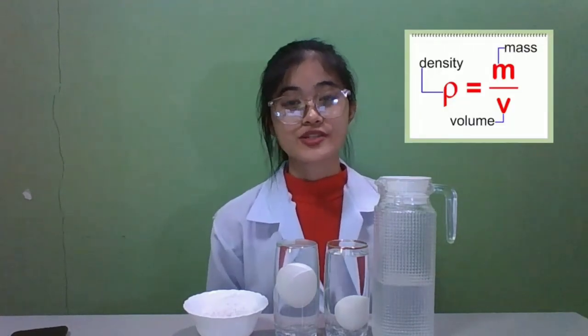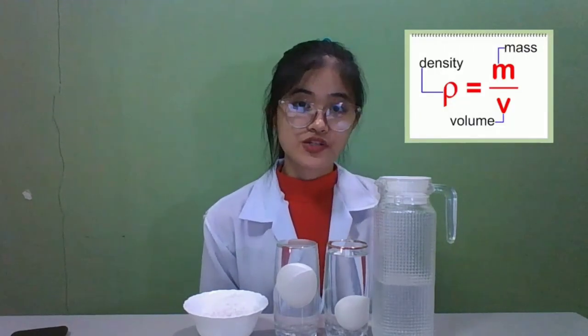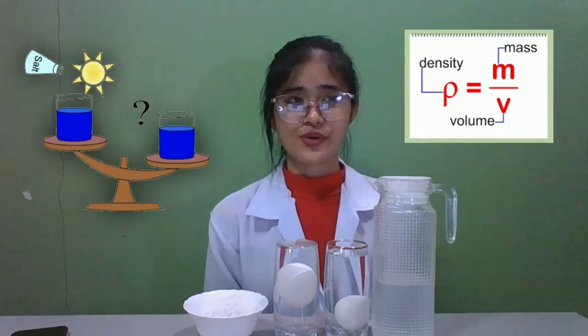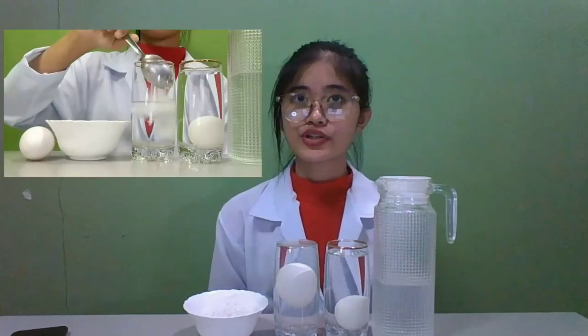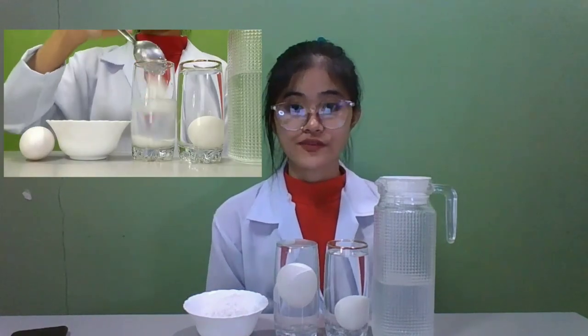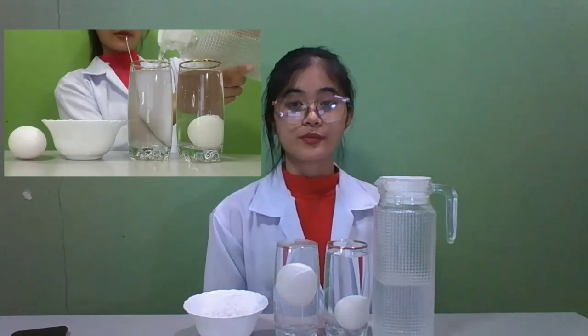Why does it happen? Earlier, I told you the definition of water density, which is defined as the weight of water per its unit volume, which is affected by the temperature and salinity of water. Water salinity refers to the amount of salt dissolved in water. In the fourth procedure, we added four tablespoons of table salt into the half-full amount of water in the second clear drinking glass. After stirring, we added the rest of the cup with plain tap water almost to the top, then we gently put the second egg into it.